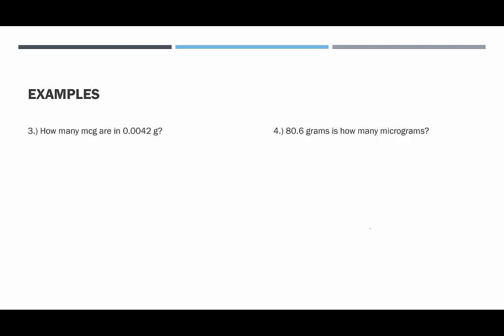How many micrograms are in 42 ten-thousandths of a gram? So a pretty small amount of grams. This would be 0.0042 times one million, which means we move the decimal point six places to the right — one, two, three, four, five, six — and we end up with 4,200 micrograms. So 42 ten-thousandths of a gram is equivalent to 4,200 micrograms.